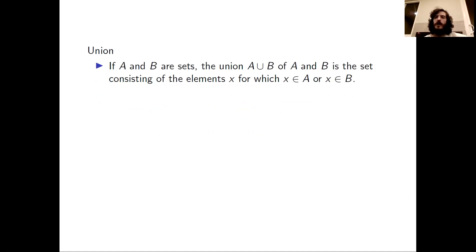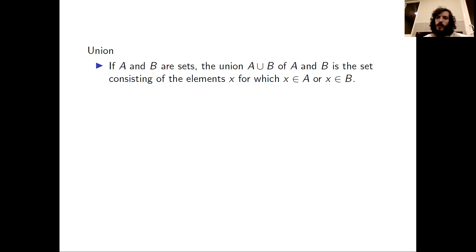The first operation that we will consider is the union. If A and B are sets, the union A union B of A and B is the set which consists of elements X for which X is an element of A or X is an element of B. We can write this set, the union of A and B, more succinctly using math notation.